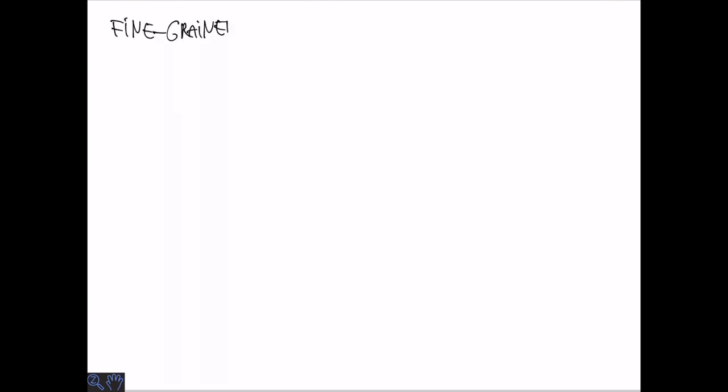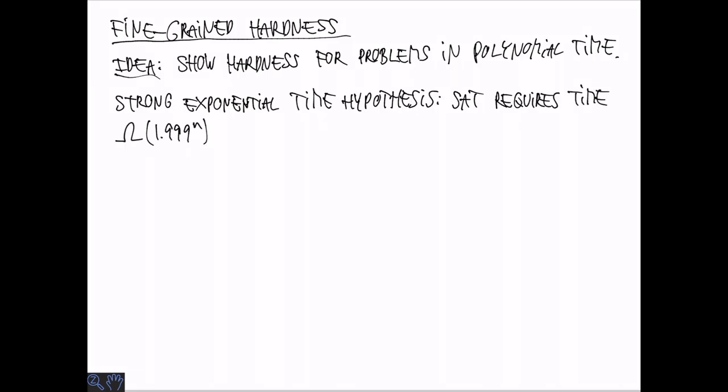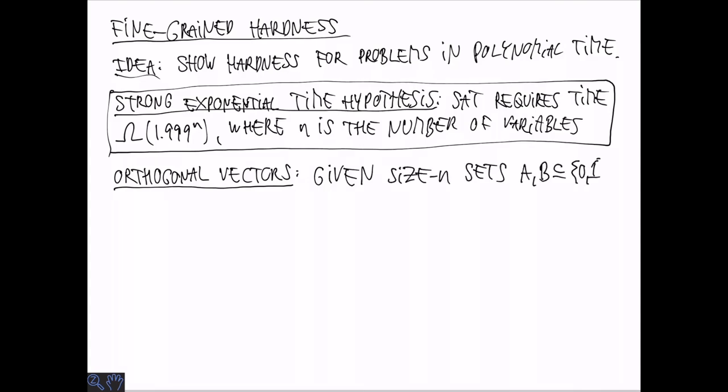Finally, we look at so-called fine-grained hardness results, which are not covered in the book because these are recent developments. The idea here is to show hardness also for problems that are not NP-hard but are in polynomial time. Many of the fine-grained results start with the Strong Exponential Time Hypothesis, which says that the satisfiability problem requires time 1.999 to the power n, where n is the number of variables in the SAT instance. 2 to the n is the time-bound for the best-known but also the trivial algorithm for satisfiability that just tries all combinations.